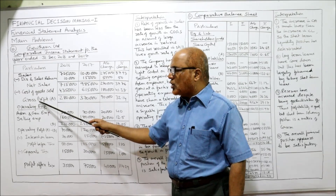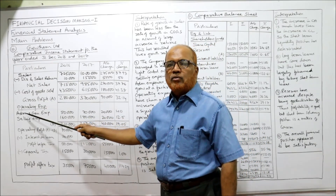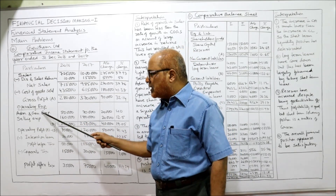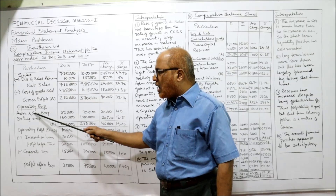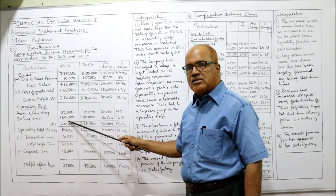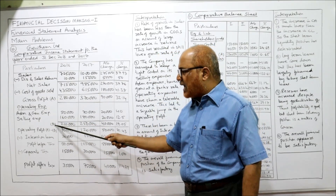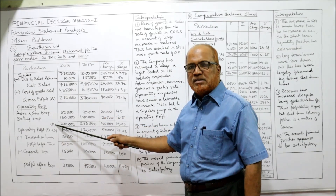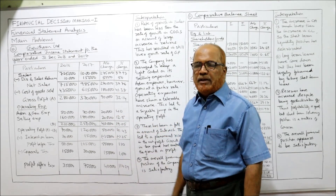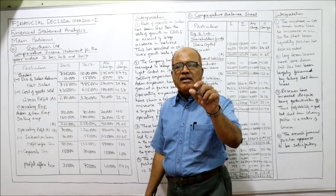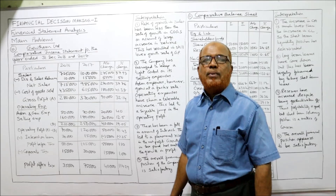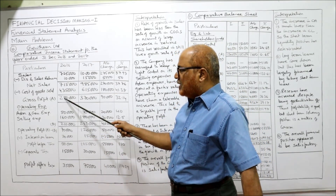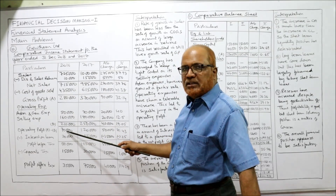From sales, deduct discount and sales returns to get net sales. From net sales, deduct cost of goods sold to get gross profit. From gross profit, deduct operating expenses — two operating expenses are given: administrative and general expense, and selling expense. These two are called operating expenses. Take the total and denote it as B; A is the gross profit, B is the operating expenses. A minus B — gross profit minus operating expenses — gives operating profit. Here operating profit is 2,80,000 minus 2,10,000 equals 70,000.